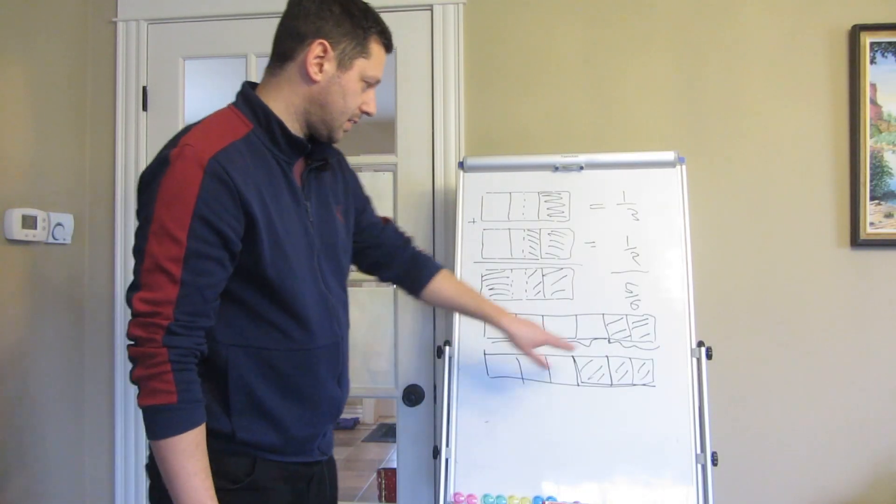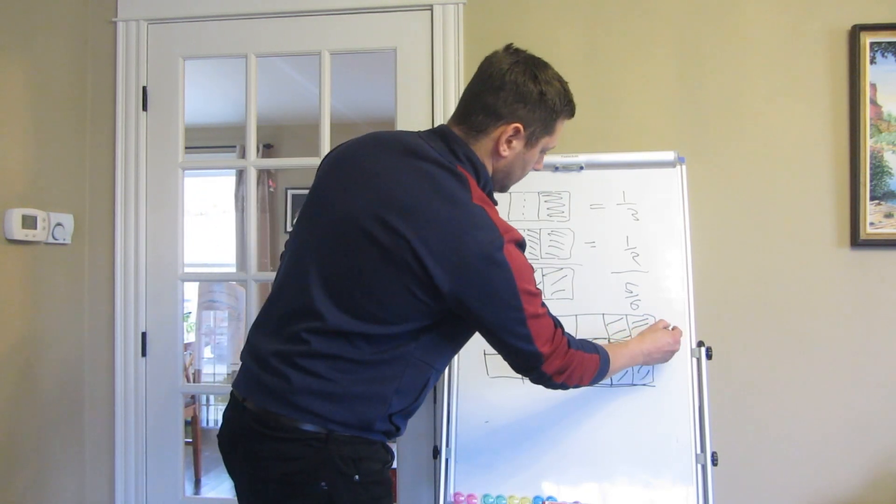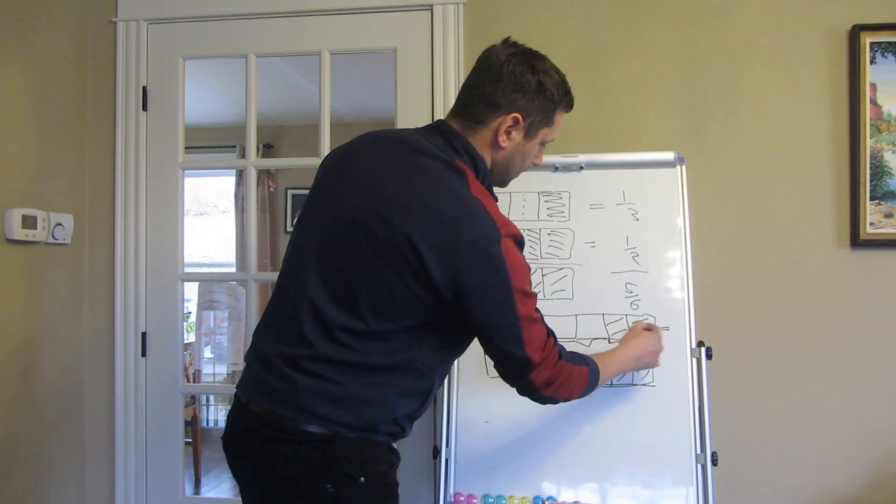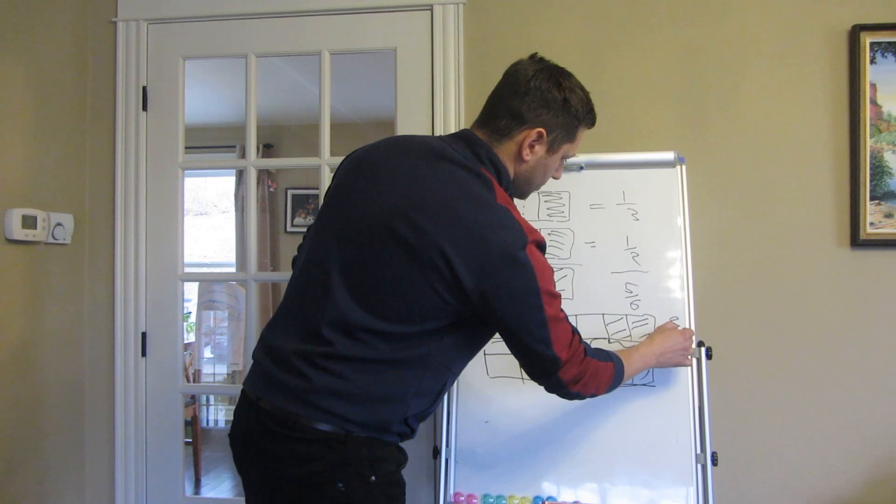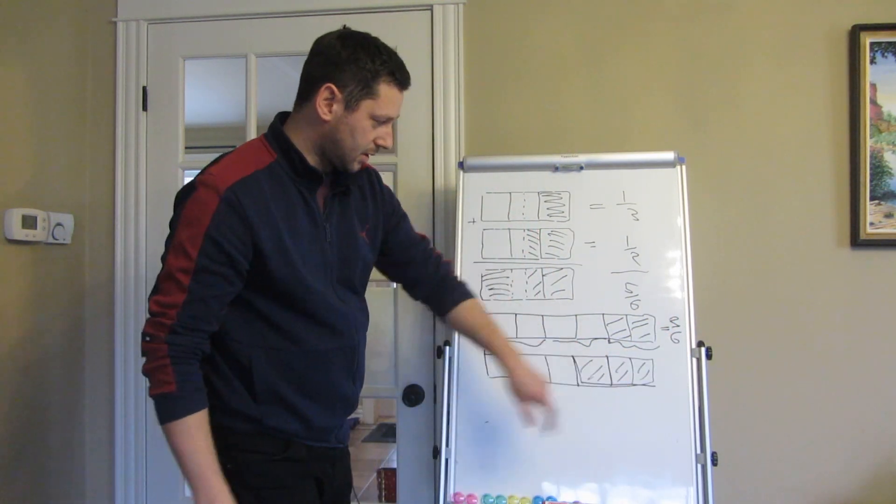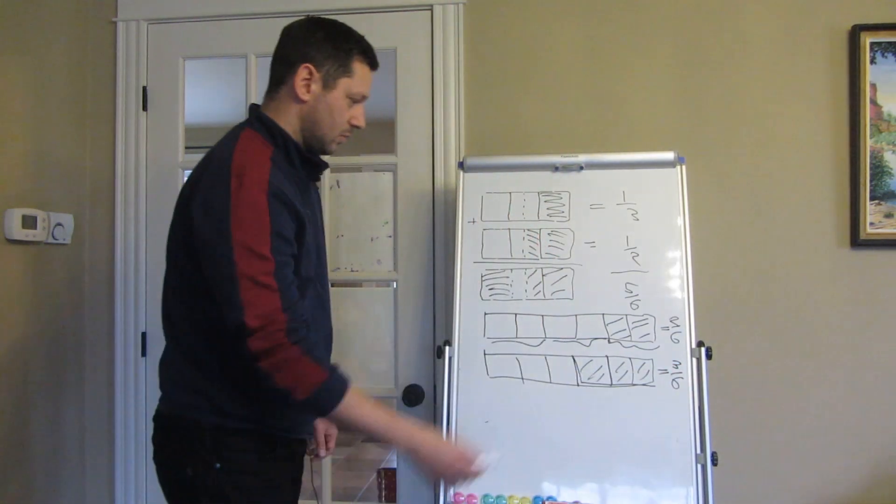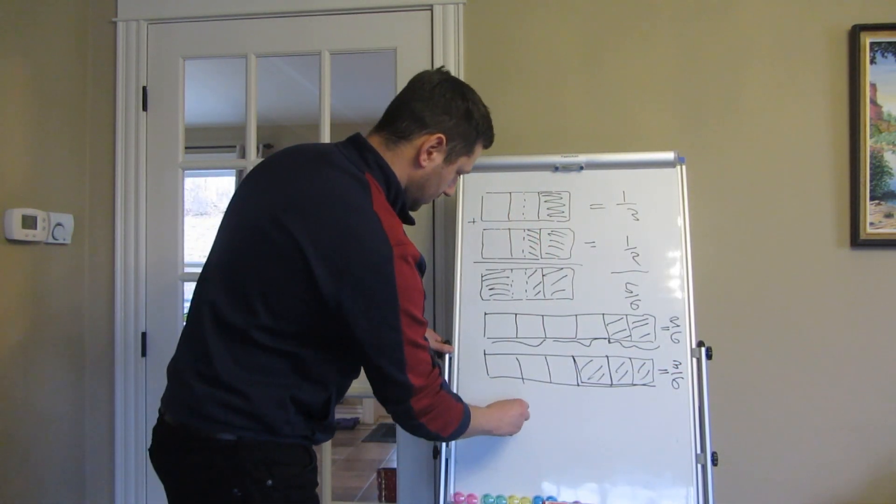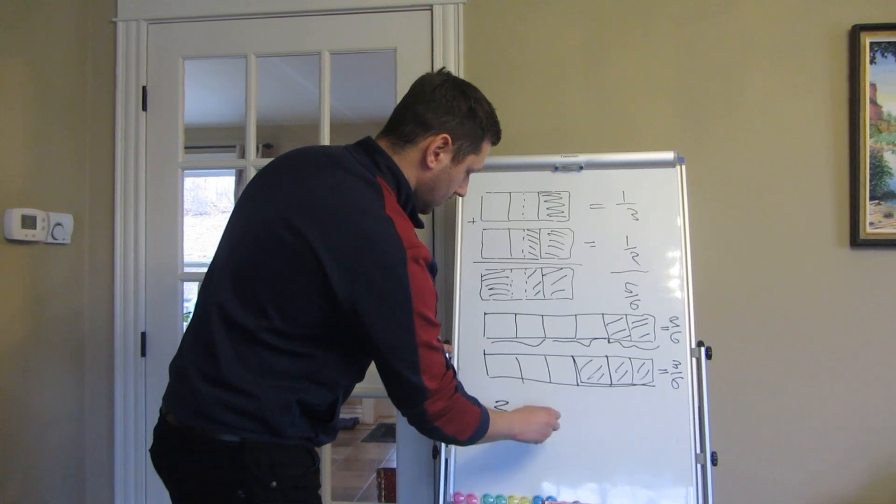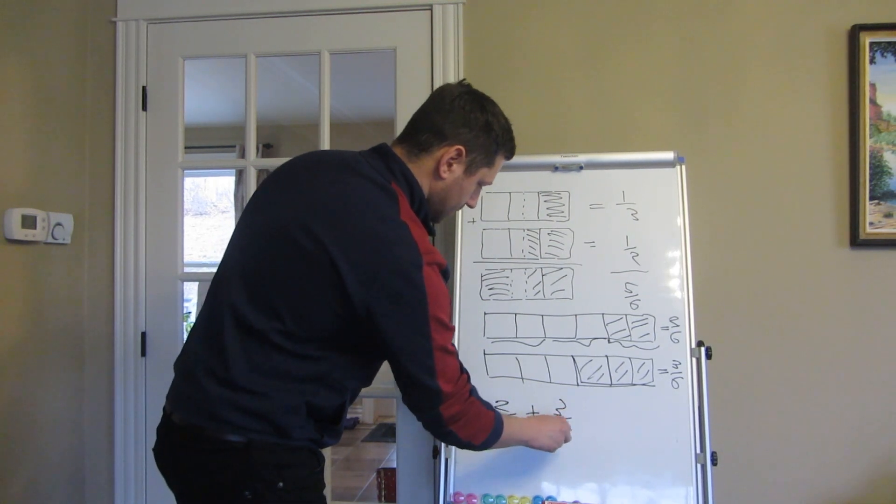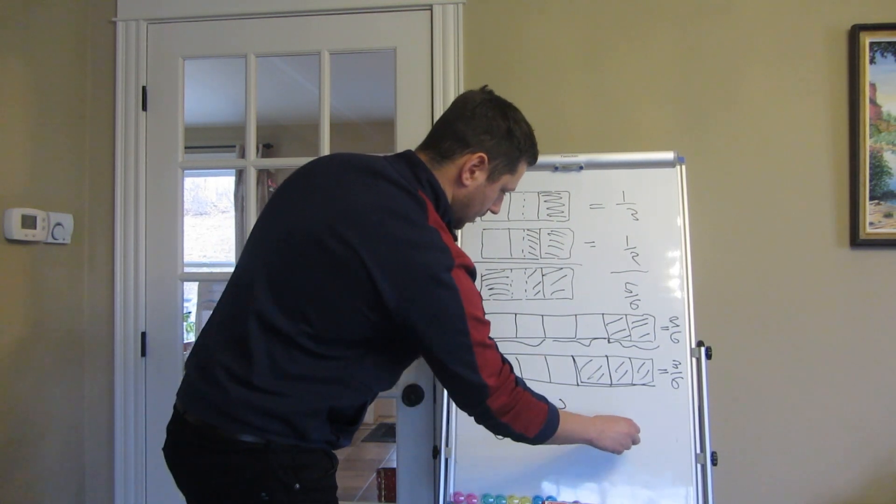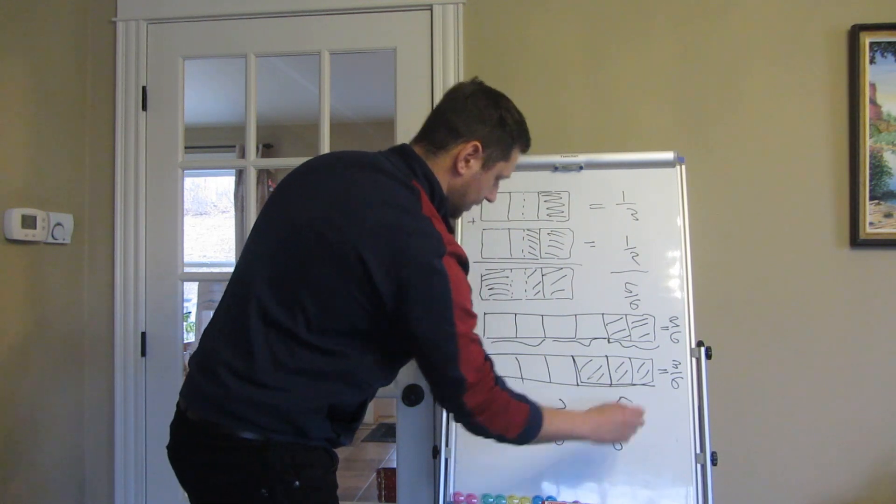So we can see that if we take one third in this case, which is two sixths, and the half, which equals three sixths, so we get the number two sixths plus three sixths equals five sixths.